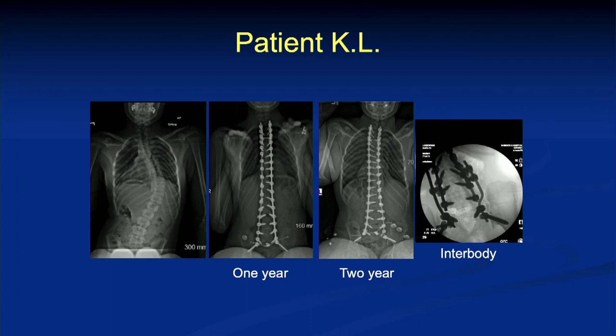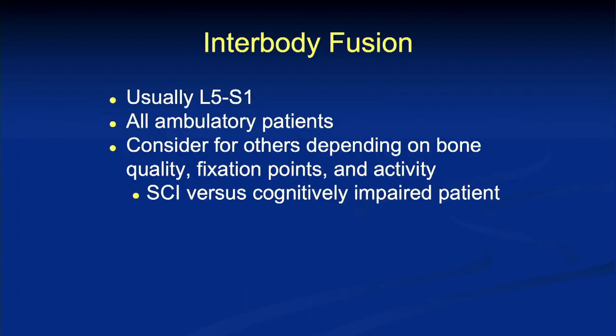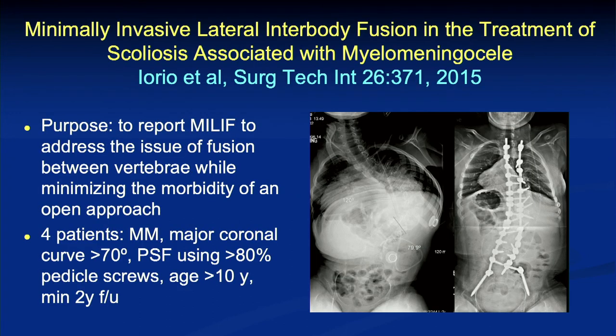The question becomes: if pelvic fixation failure is such a big issue, why not do the interbody up front? Factors we consider for interbodies: ambulatory neuromuscular patients — we'll go ahead and do an interbody at L5-S1. And of course think about the quality of their bone. We have a much lower threshold for doing an interbody down below in these patients today. We published a paper on patients with myelomeningocele where Pat Cahill took the lead, supplementing with lateral interbodies because of the lack of posterior elements.